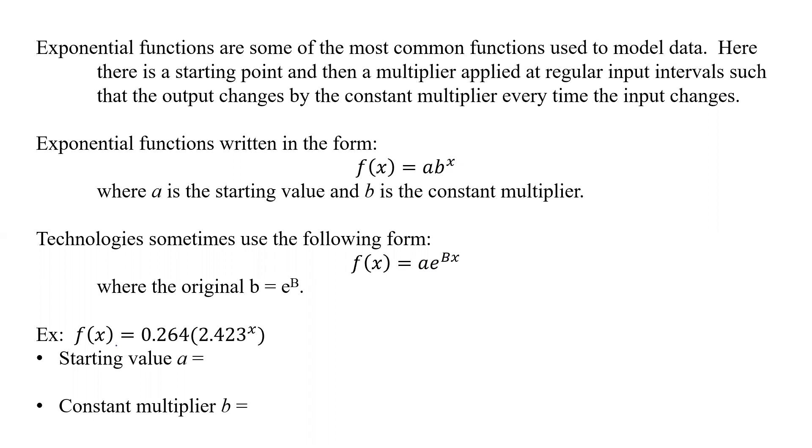So here, for example, if we have f of x equals 0.264 times 2.423 raised to the power x, what is the starting value? Well, that's this piece right here. So that's 0.264. So we're starting at 0.264, whatever we're talking about. And our constant multiplier is 2.423. Now, as we've talked about before, since that's greater than one, we're going to be an increasing function.